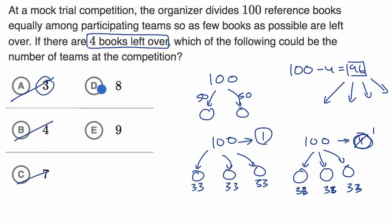Now is 96 divisible by eight? Well sure, that's eight times 12. So you could have eight teams that each get 12 books, and then you would have four left over. And so this one looks great, because 96 is perfectly divisible by eight, and eight is larger than the amount that you have left over.